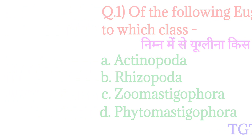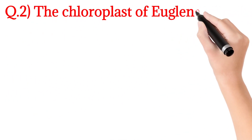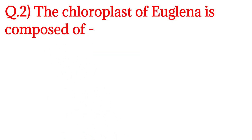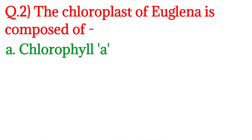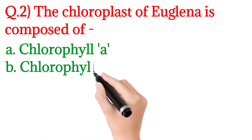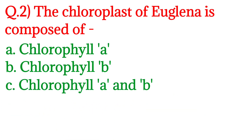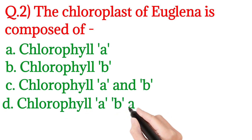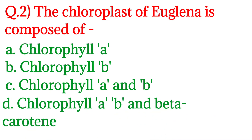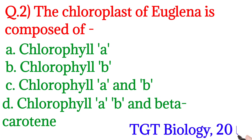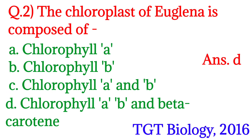Question 2: The chloroplast of Euglena is composed of? Option A: Chlorophyll A, Option B: Chlorophyll B, Option C: Chlorophyll A and Chlorophyll B, Option D: Chlorophyll A, B and Beta Carotene. This question was asked in TGT Biology 2016. The answer is Option D: Chlorophyll A, B and Beta Carotene.